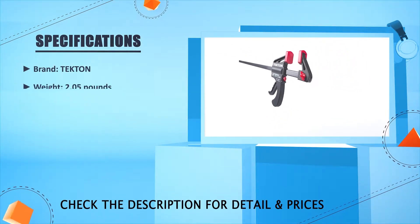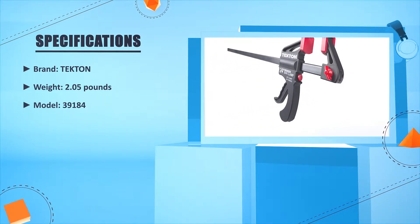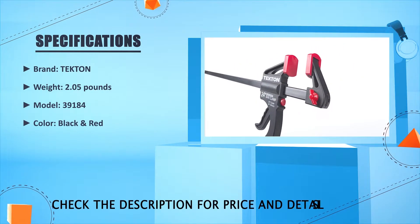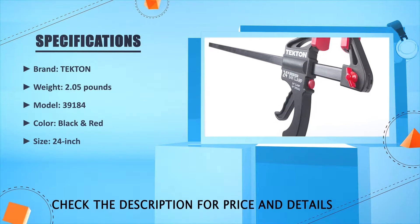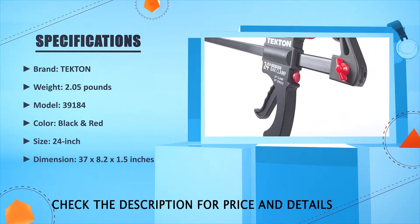Brand: Tecton. Weight: 2.05 pounds. Model: 39184. Color: black and red. Size: 24 inches. Dimension: 37 x 8.2 x 1.5 inches.